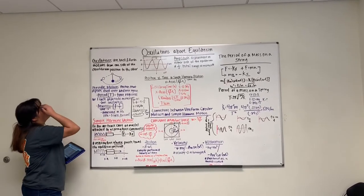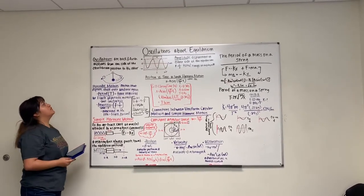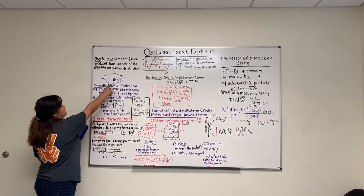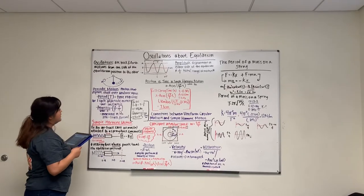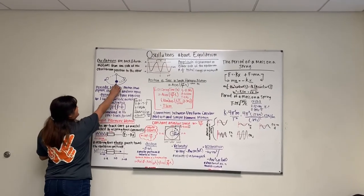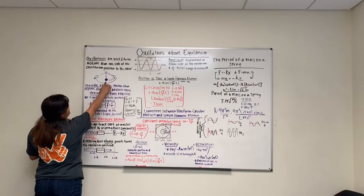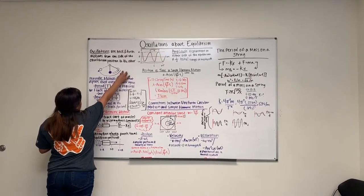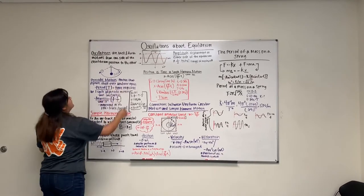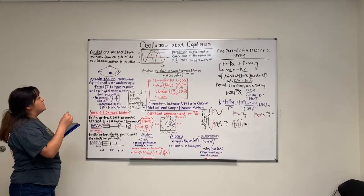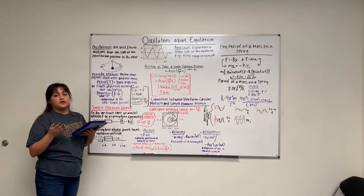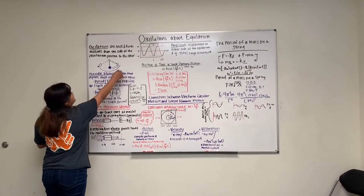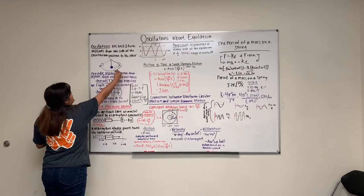Oscillations are the back and forth motions from one side of the equilibrium position to the other. In this case, we use the little pendulum figure, and right here you can see that it's in a resting state or the stable equilibrium state. Once it is moved to the right a little bit, the restoring force applies, and the restoring force always wants to get to the equilibrium, which is towards the middle. So once it is let go, it goes towards that side.